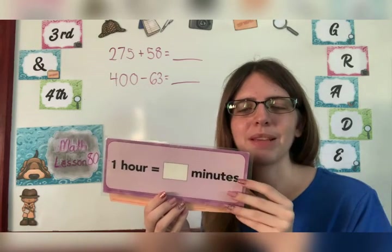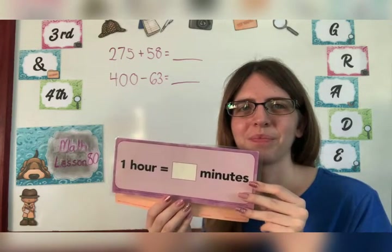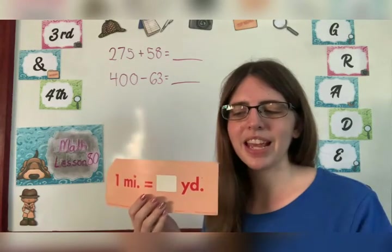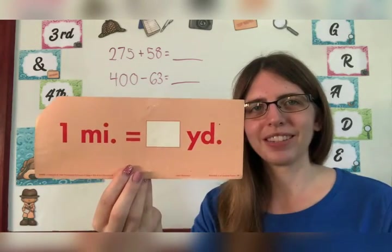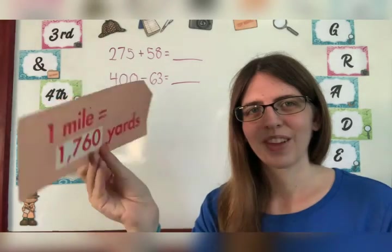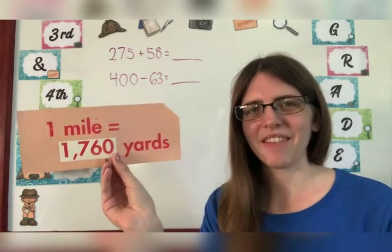One hour equals how many minutes? Sixty minutes. And one mile equals how many yards? One thousand seven hundred sixty.